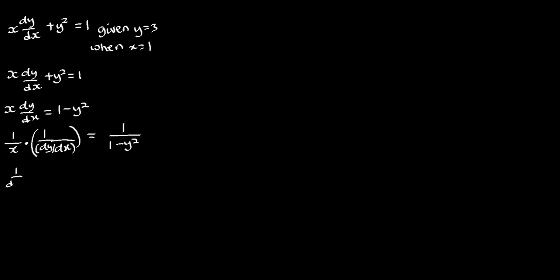Now, 1 over dy/dx is the same as dx/dy. So we are going to do a substitution here. When I do that, we are going to have (1/x)(dx/dy) to be equal to 1 over (1 minus y squared).